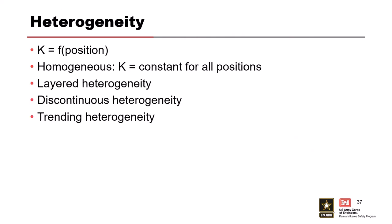Homogeneous soil has constant permeability everywhere. In most cases you'll have layered heterogeneity — clays and sands and different materials throughout your soil. There's also discontinuous heterogeneity — pockets of sand in your clay, for example. Trending heterogeneity means the hydraulic conductivity increases with depth — I've seen this in sand aquifers along rivers beneath levees, where gradation gets coarser and permeability gets higher as you go down.